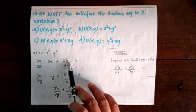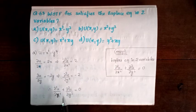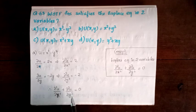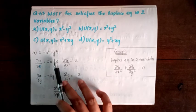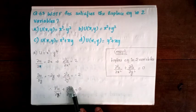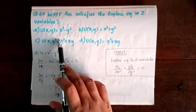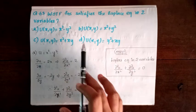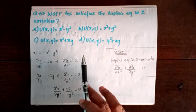We verify that ∂²u/∂x² plus ∂²u/∂y² equal to 0. This satisfies the Laplace equation in two variables, so our option is correct. We can also backup-check the other options against the Laplace equation.